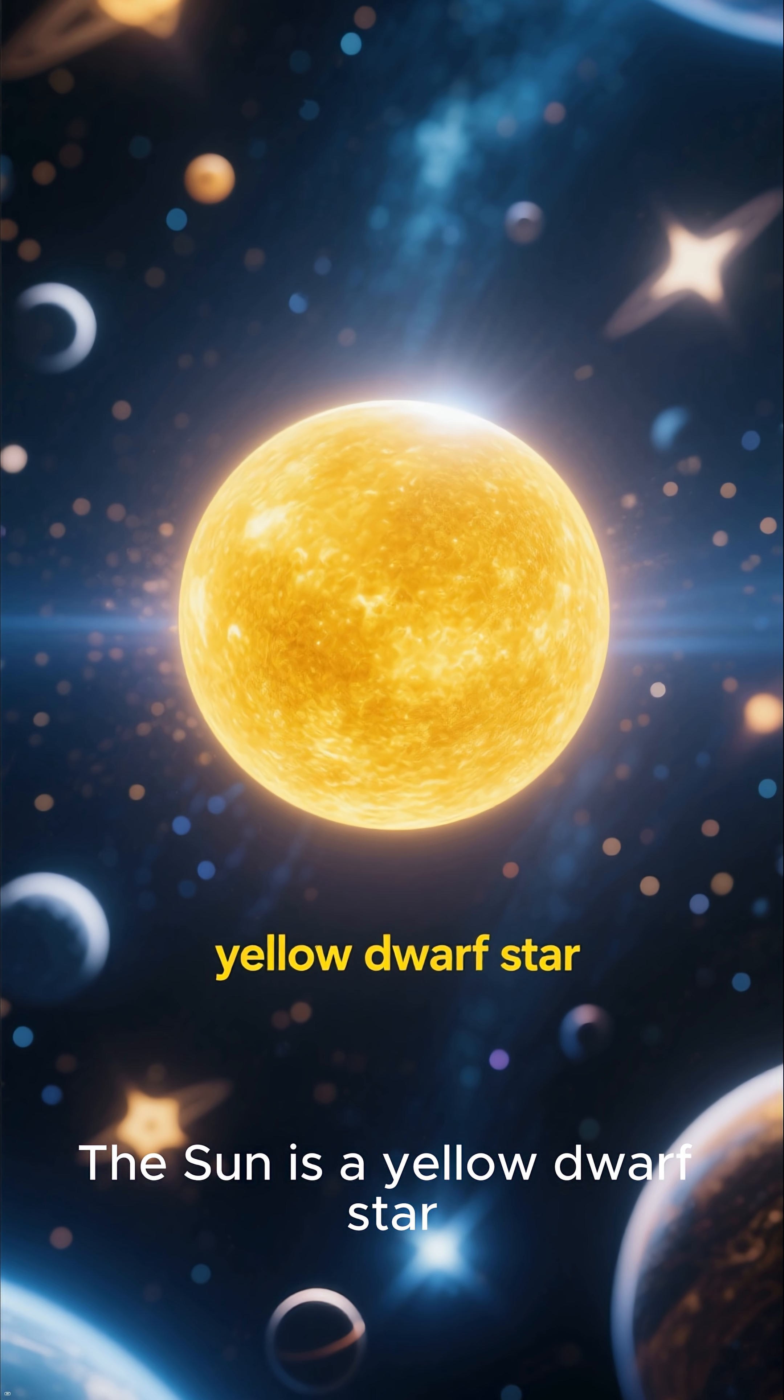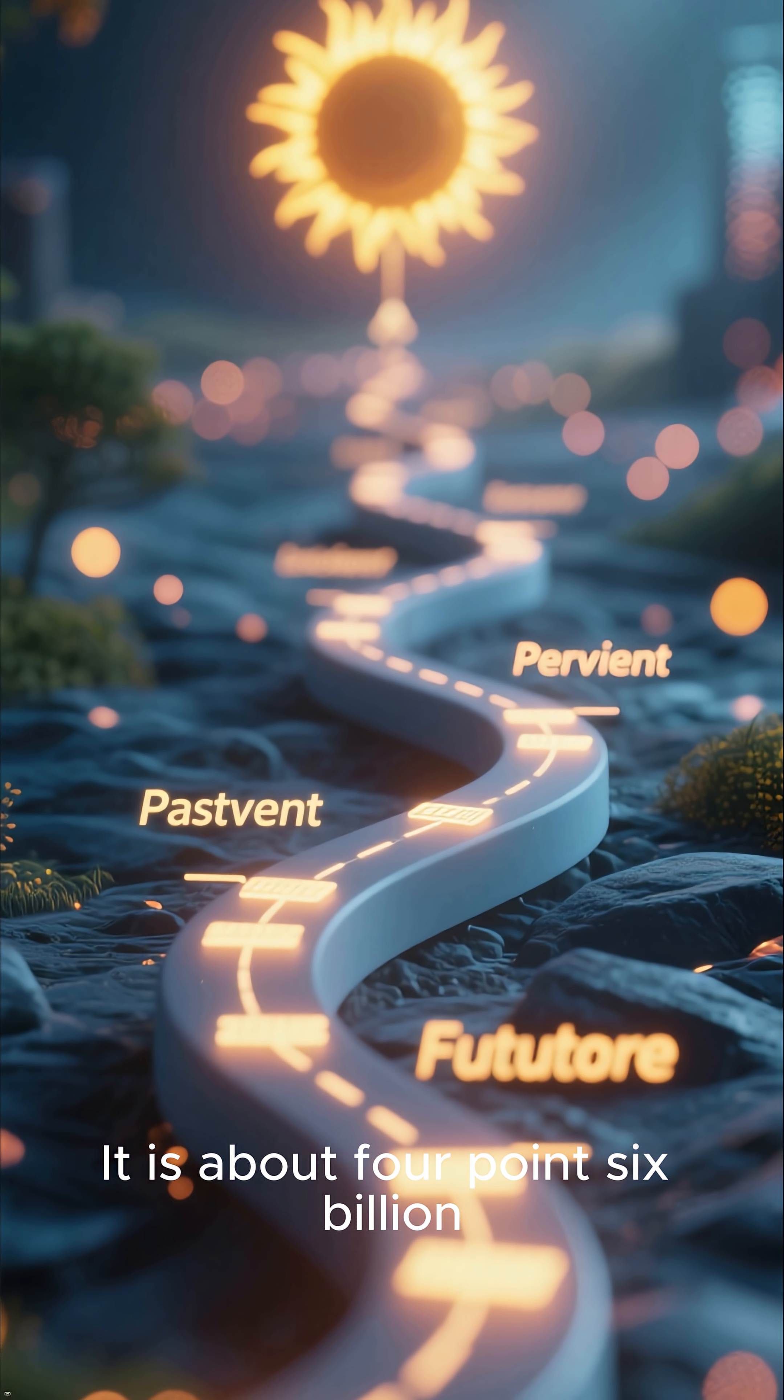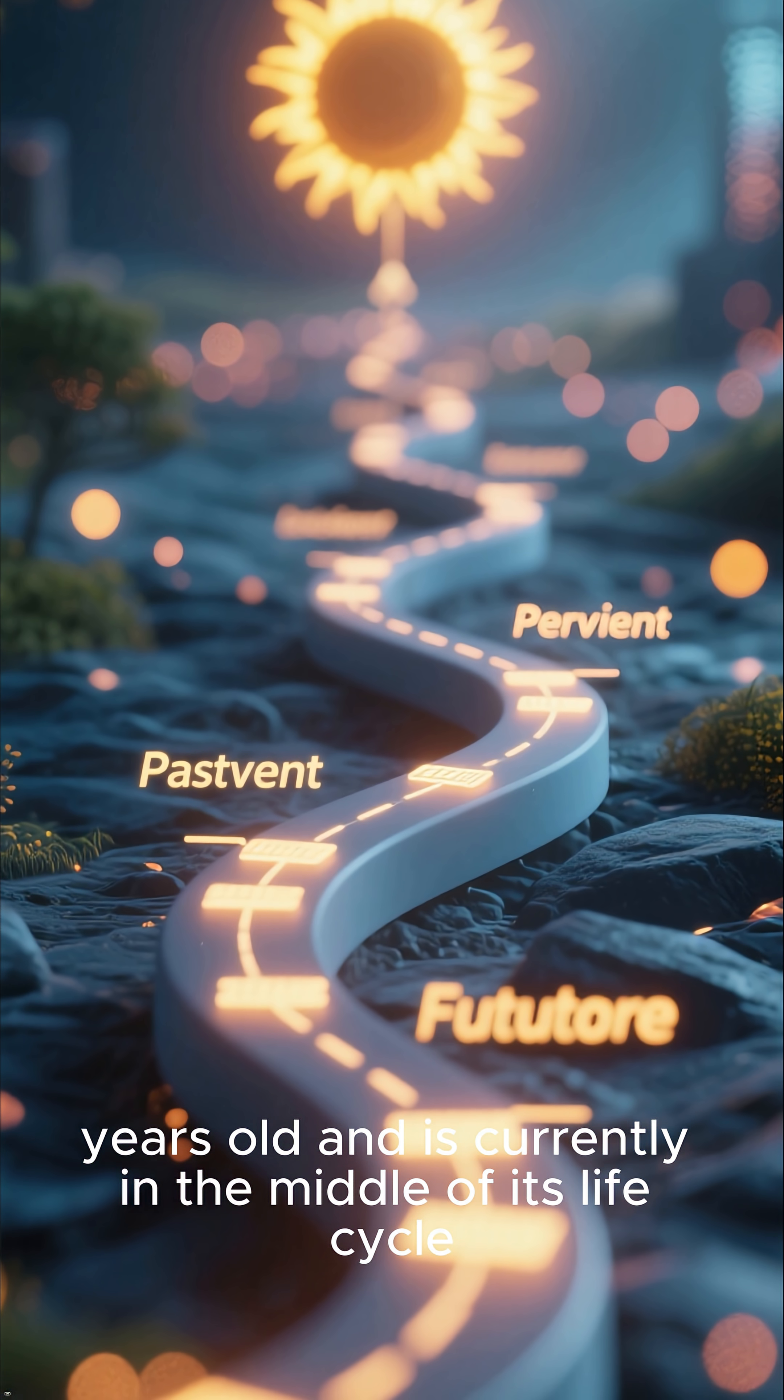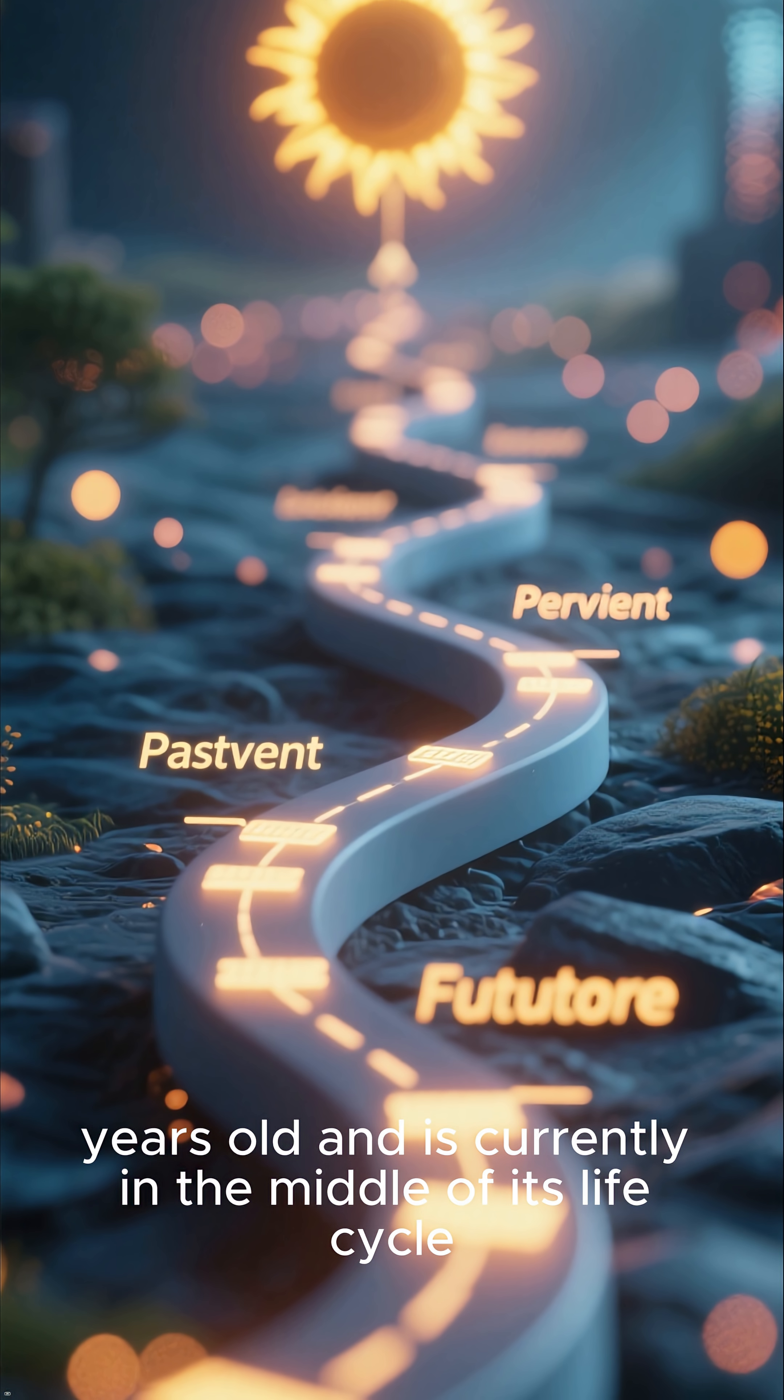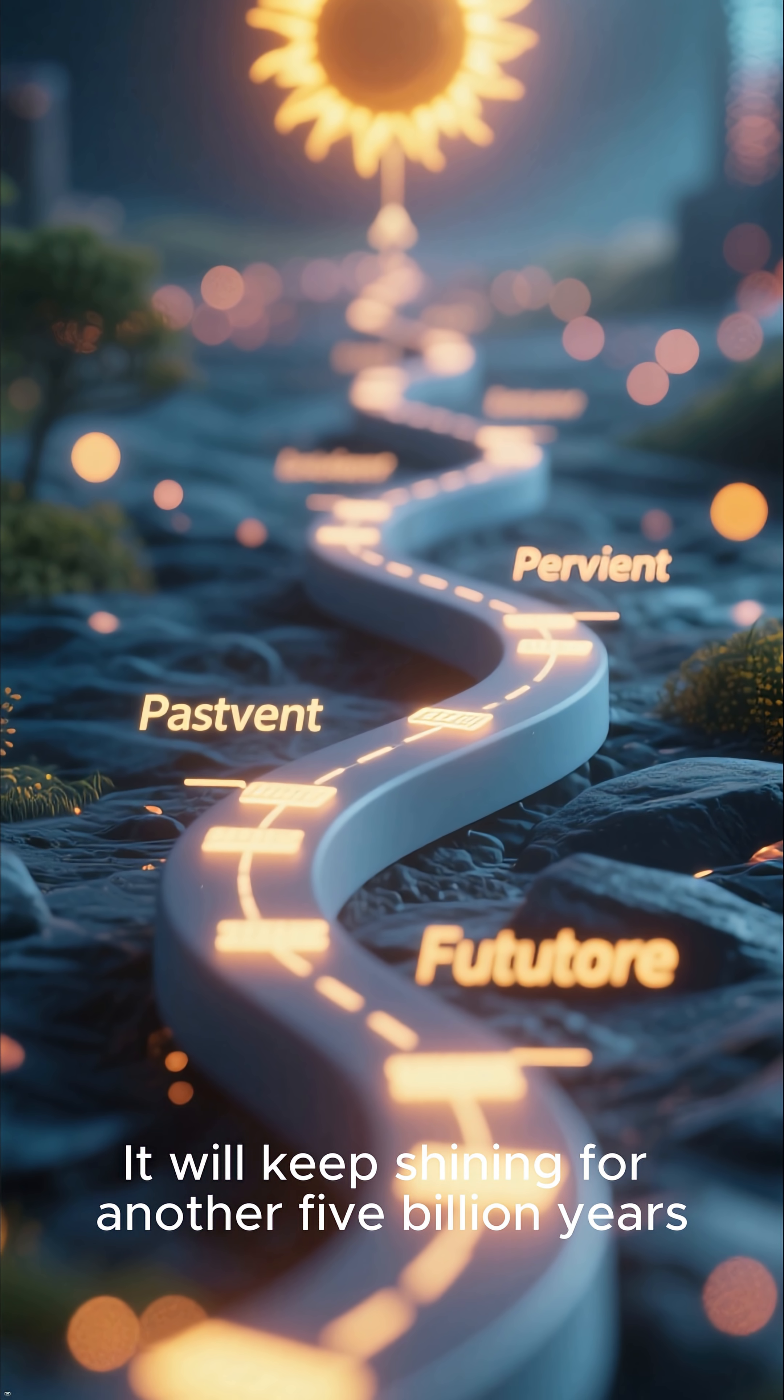The sun is a yellow dwarf star, which is a common type. It is about 4.6 billion years old, and is currently in the middle of its life cycle. It will keep shining for another 5 billion years.